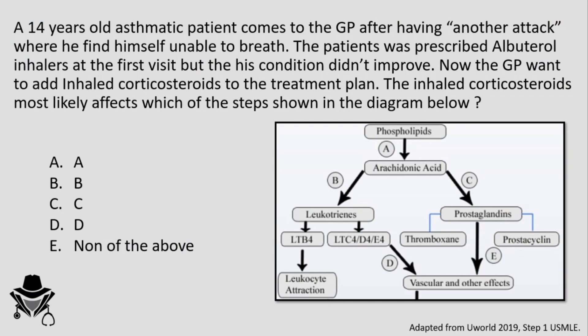Going back to the question: the GP has moved to the next step of asthma treatment by giving inhaled corticosteroids. As we discussed, inhaled corticosteroids act on phospholipase A2 — so the answer is A, the step moving from phospholipids to arachidonic acid. Options B and D refer to leukotriene inhibitors, and C refers to NSAIDs. Thank you for watching and see you in another video.